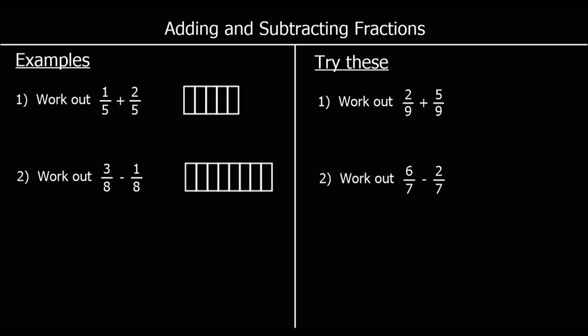The first question says: work out one-fifth plus two-fifths. So if we've got one-fifth of something — one-fifth of this shape — and we add two-fifths, one part plus two parts means we've got three parts. So one-fifth plus two-fifths is three-fifths.